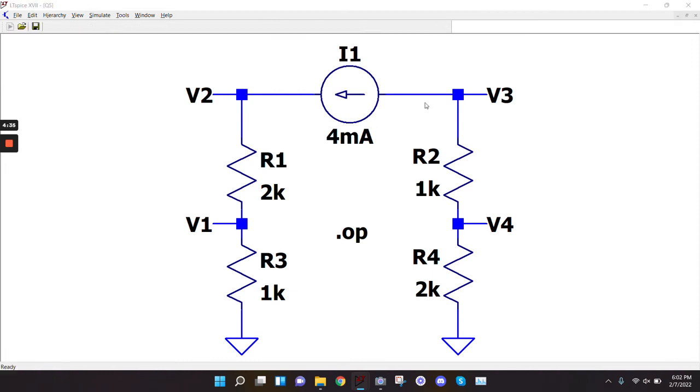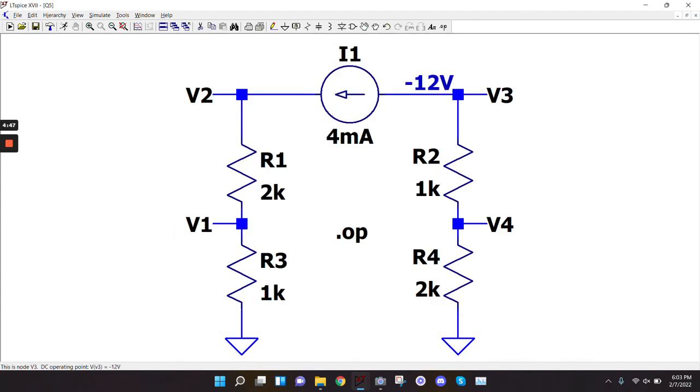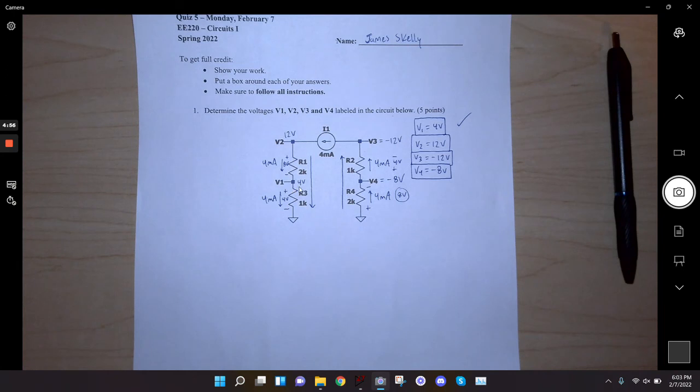You can see v1, v2, v3, v4 right here. I can also come back to the circuit and click on the nodes to show those voltages: 4, 12, negative 12, negative 8. And then we come back here we got 4, 12, negative 12, negative 8. So hope this helps everybody, and I'll see you all Wednesday.